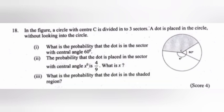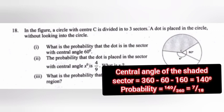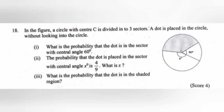3. What is the probability that the dot is in the shaded region? Answer: Central angle of the shaded sector equal 360 minus 60 minus 160 equal 140 degree. Probability equal 140 by 360 equal 7 by 18.